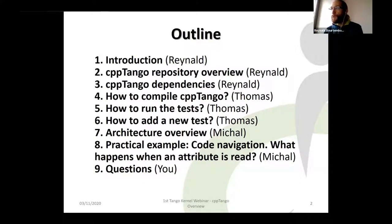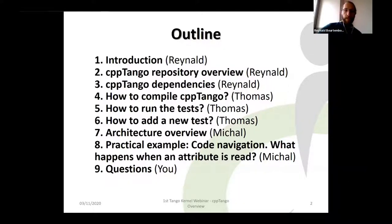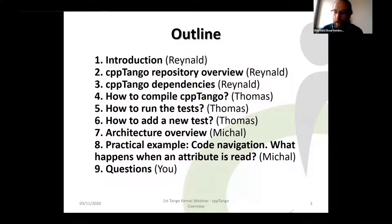I will start with a brief overview of the CPP Tango repository, then talk about the dependencies required to build the Tango C++ library. Thomas will go on with how to compile CPP Tango, how to run the tests, and how to add a new test. Finally, Michelle will present an architecture overview and a practical example showing what happens when an attribute is read. Then you will have the possibility to ask some questions.